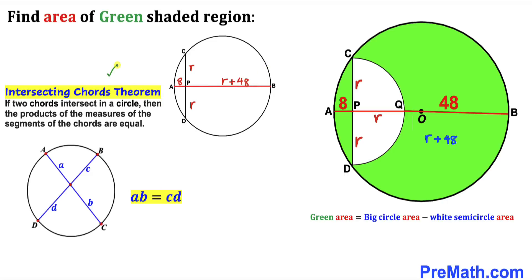Let's recall the intersecting chords theorem. According to this theorem, if two chords intersect in a circle, then the product of the measures of the segments of the chords are equal, as you can see in this diagram. Here, AC and BD are two chords that intersect each other, and the product A times B equals C times D.